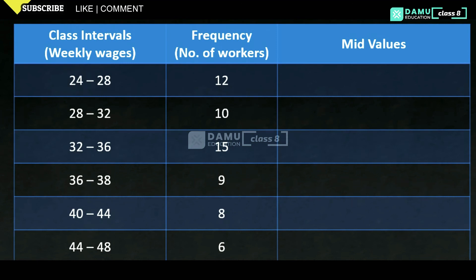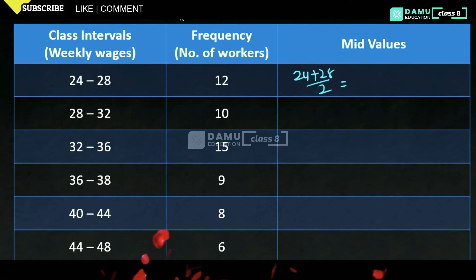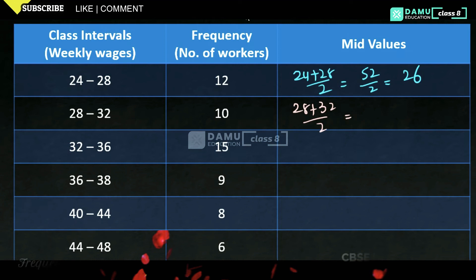For the class 24–28, the mid value is (24 + 28) / 2 = 52 / 2 = 26. For the next class, 28–32, we calculate (28 + 32) / 2.